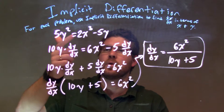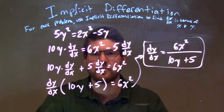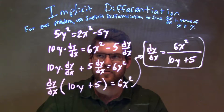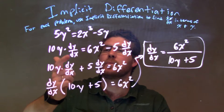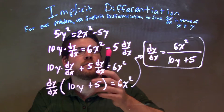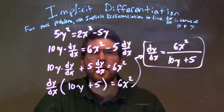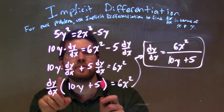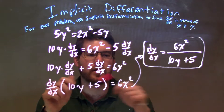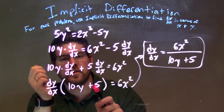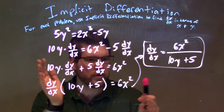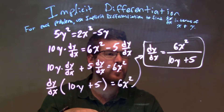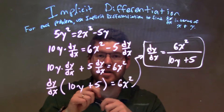Let's recap. We were given 5y squared equals 2x to the third minus 5y. The left-hand side becomes 10y times dy/dx. The right-hand side becomes 6x squared minus 5 times dy/dx. I added 5 dy/dx to both sides, then pulled out a dy/dx, leaving dy/dx times (10y plus 5) equal to 6x squared on the right. Dividing both sides by (10y plus 5) gives the final answer: dy/dx equals 6x squared over 10y plus 5.